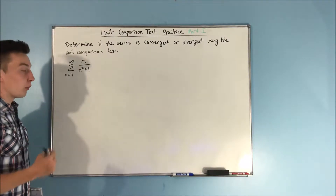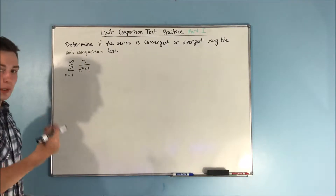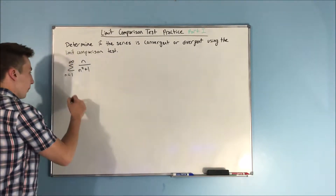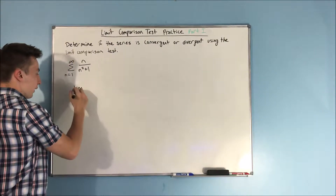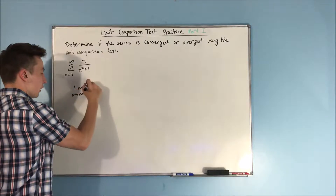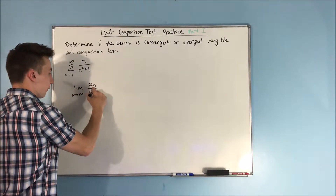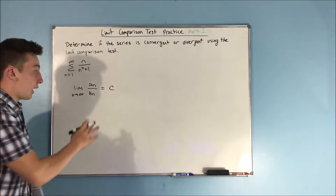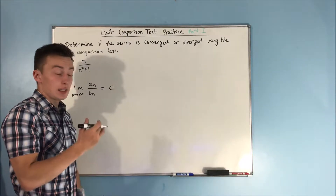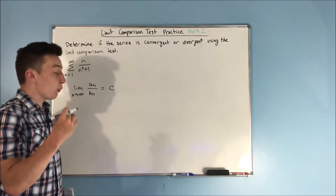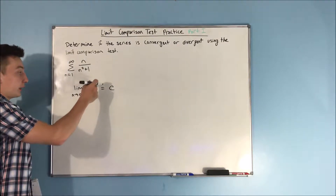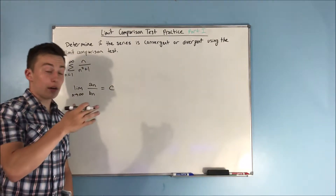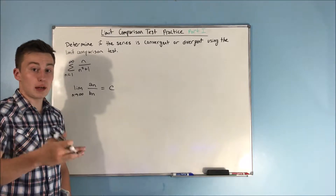Remember what the limit comparison test says, so we're all on the same page here. The limit comparison test says if the limit as n approaches infinity of a sub n over b sub n equals c, and this c is finite and greater than zero, then we know that both the series a sub n and b sub n will either both converge or both diverge.